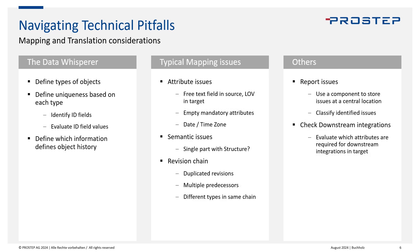When looking into mapping, the first thing is to really understand the data — be a data whisperer. Define the types of objects, what makes each type unique, and what defines its history. What attributes define a revision chain — revision one, two, three, and so on? Is there a relation? Are there attributes, and are values available in those attributes? Validate whether there are any data objects where these attributes are missing.